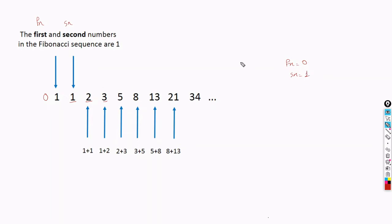In each step, the new Fibonacci element is obtained as temp = Fn + Sn. At each step Fn plus Sn will give the next value. When moving from one step to the next, if we take Fn and Sn in this case, in the next case the new Fn will be the Sn of the last step. The new Sn will be Fn plus Sn, which is temp.